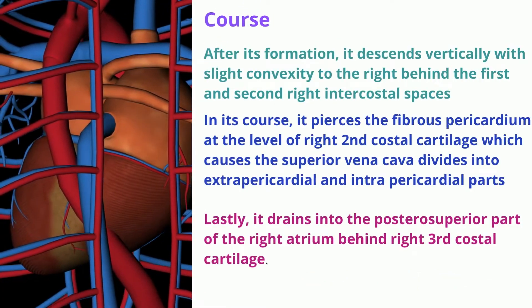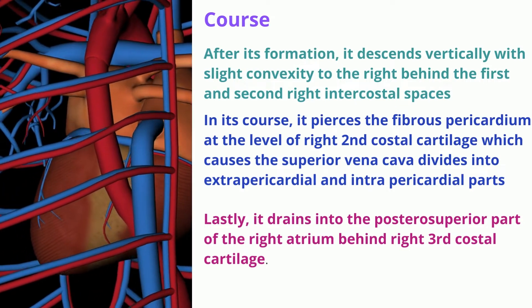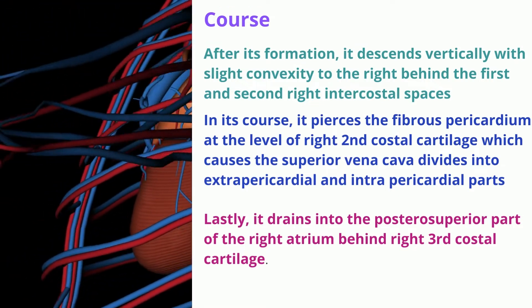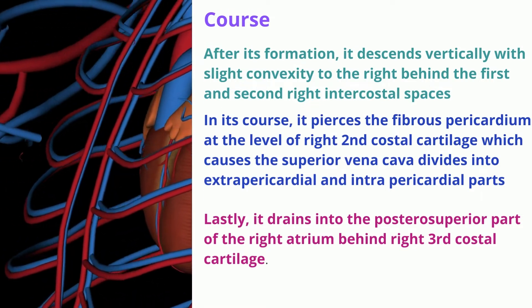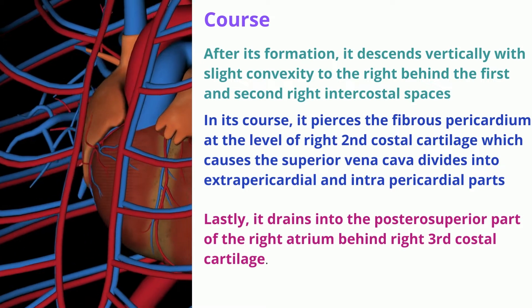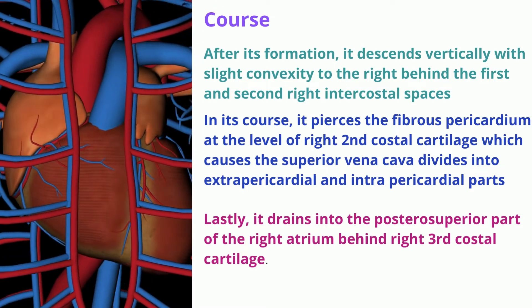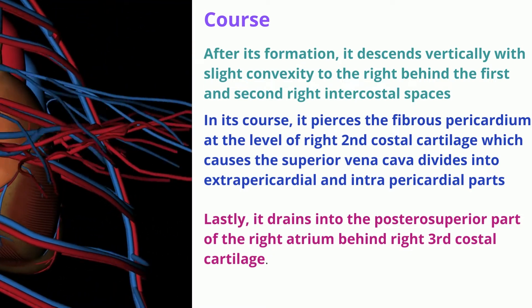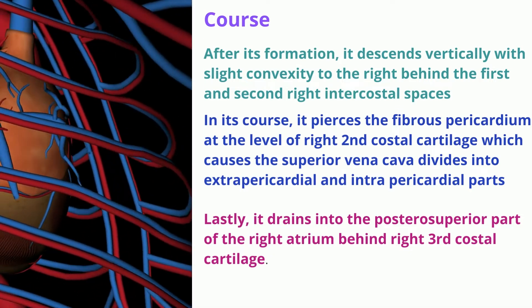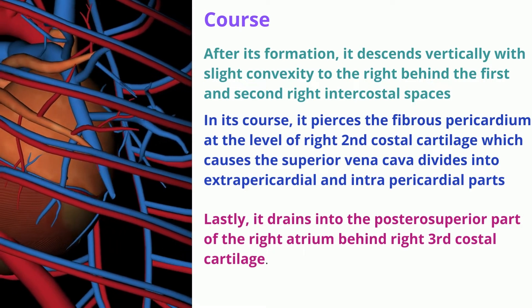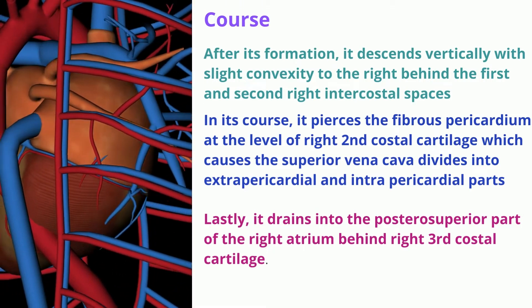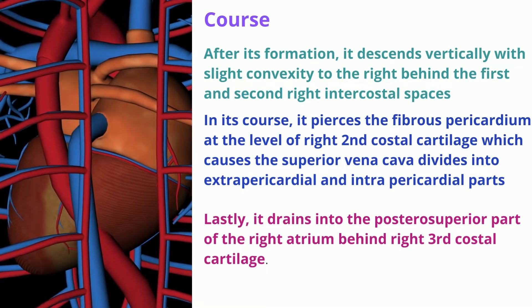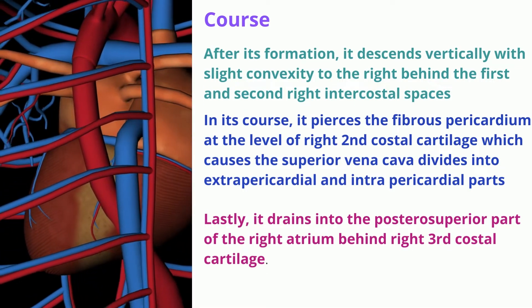Course: after its formation, it descends vertically with a slight convexity to the right, behind the first and second right intercostal spaces. It pierces the fibrous pericardium at the level of the right second costal cartilage, dividing into extrapericardial and intrapericardial parts. Finally, it drains into the posterior superior part of the right atrium behind the right third costal cartilage.